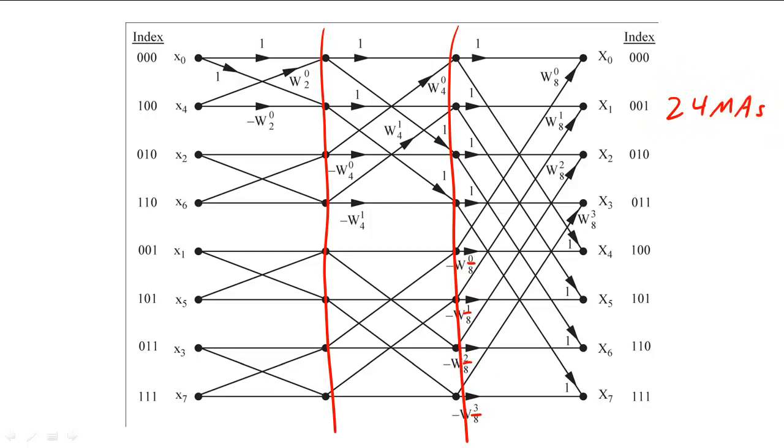Overall, the fast Fourier transform algorithm can compute the DFT of an n-sample signal with only n times log base 2 n multiply accumulates.